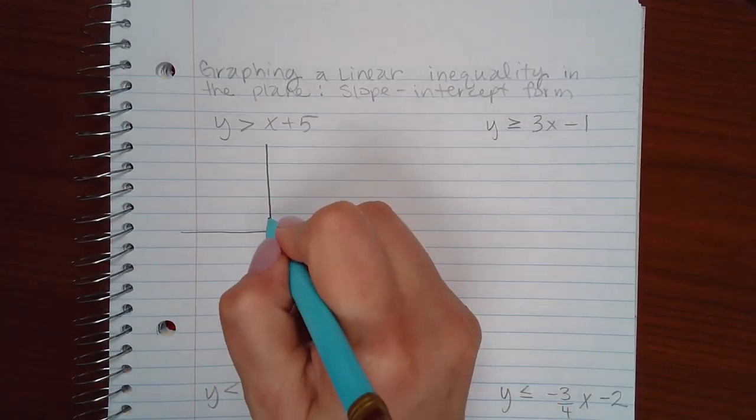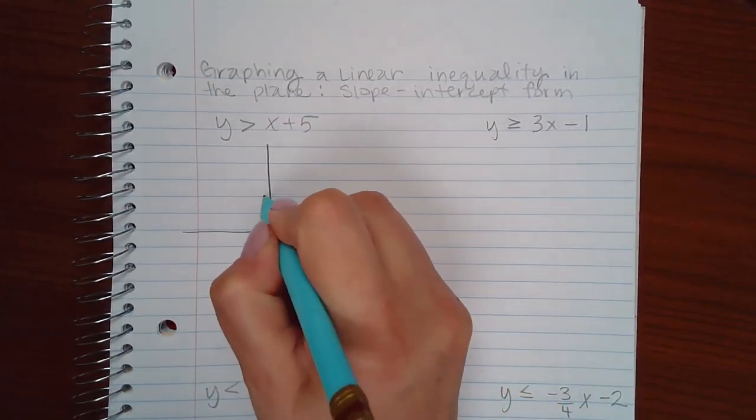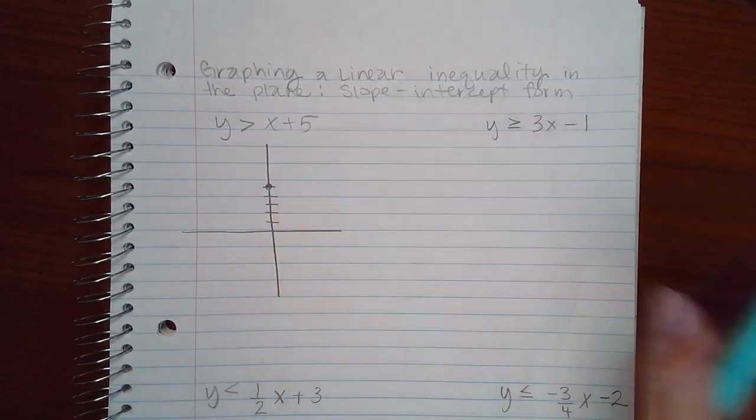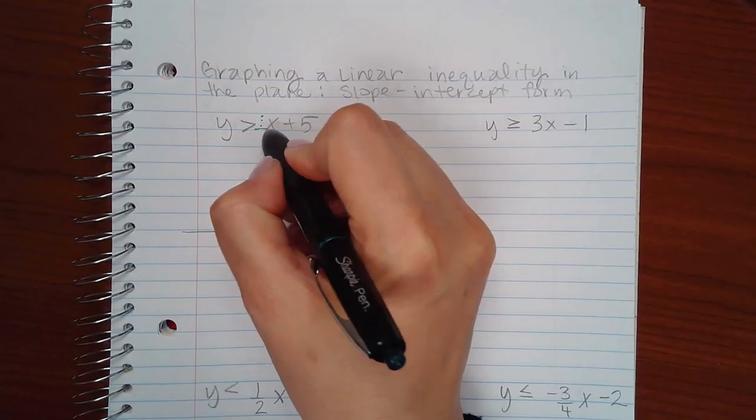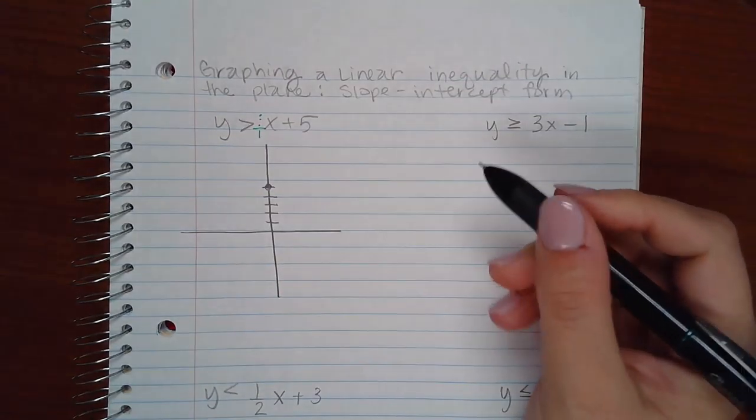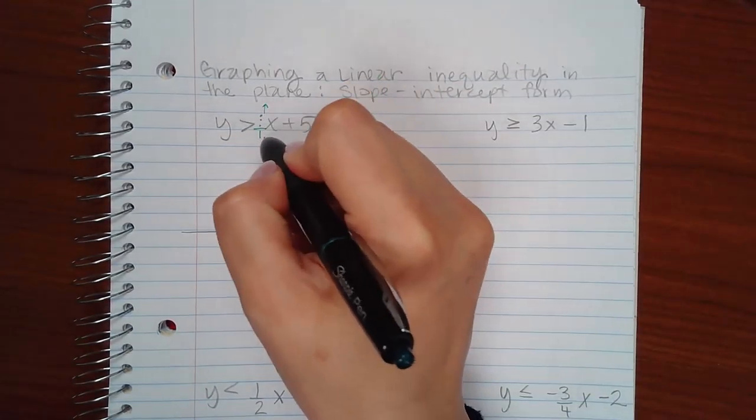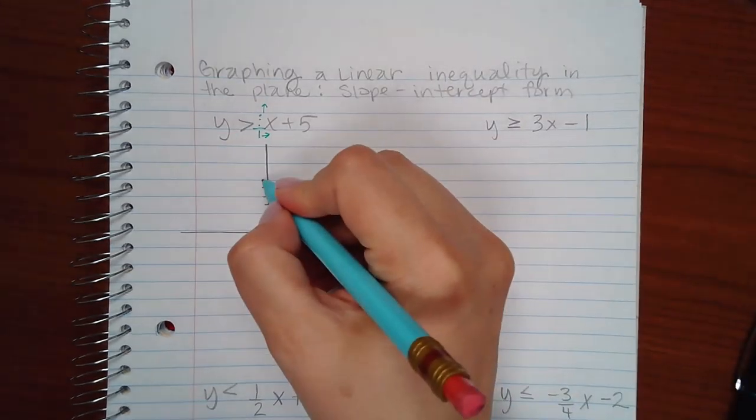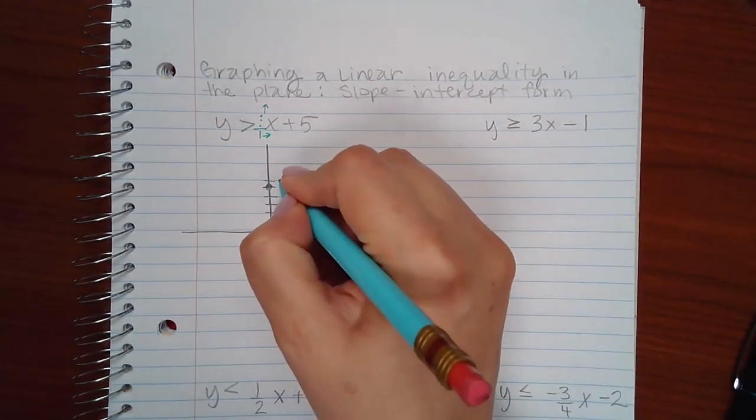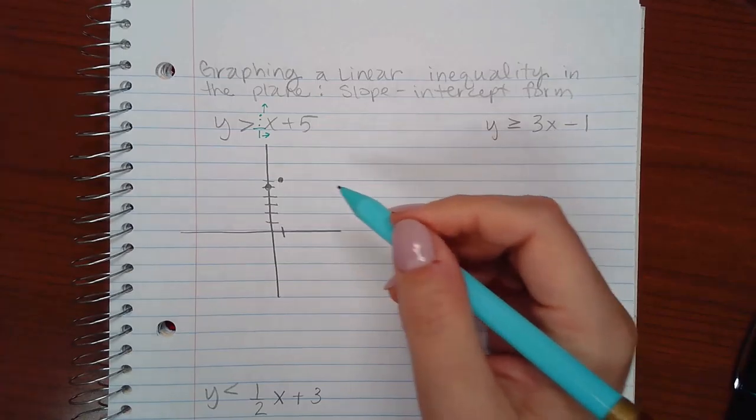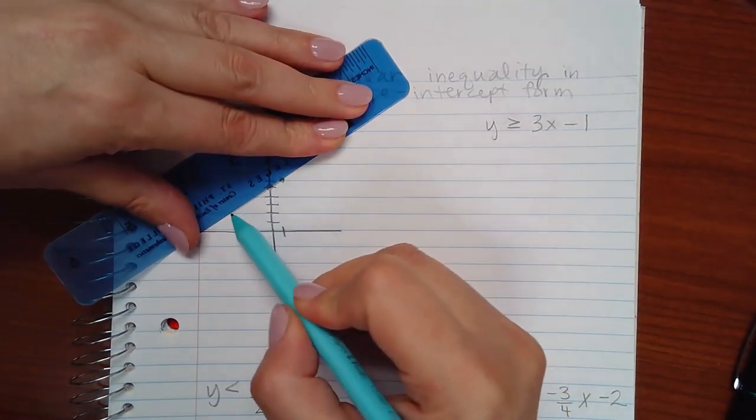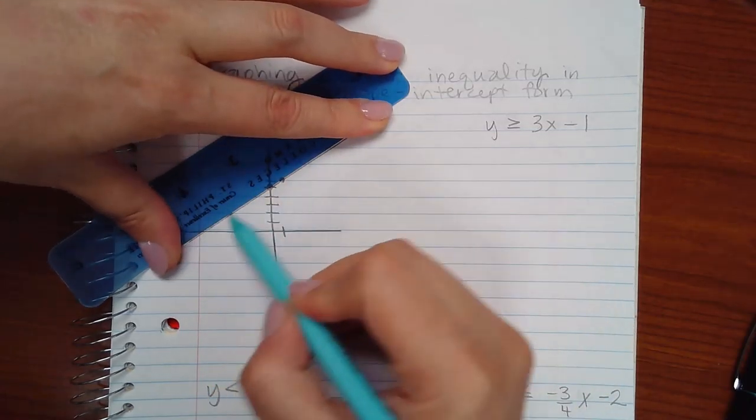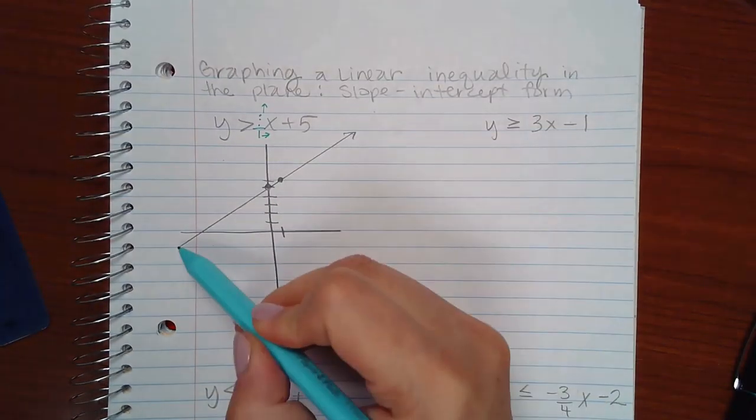Here, my y-intercept is 5, 1, 2, 3, 4, 5. And my slope is like a hidden 1, which can be written as 1 over 1. So I'm going to go up 1 unit and to the right 1 unit to get my next point. Which means my graph looks something along these lines. So this is my graph.